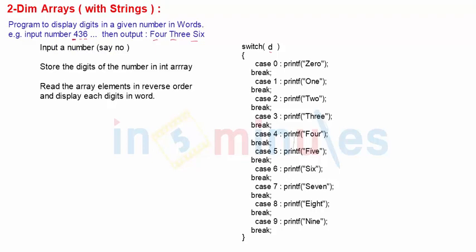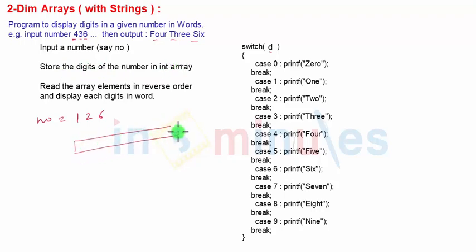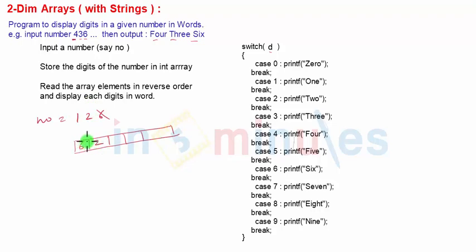The logic will be like this: we input a number — suppose the number is 126. Then we store the digits of the given number in an integer array. We'll apply the simple concept of mod and divide by 10. For example, 126 mod 10 gives 6, which we store at index 0. Then divide by 10 to get 12, and 12 mod 10 gives 2.